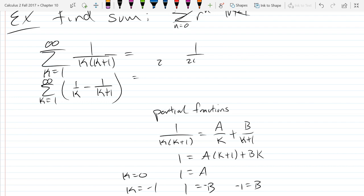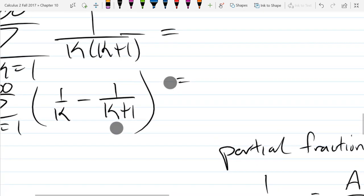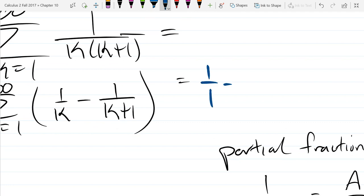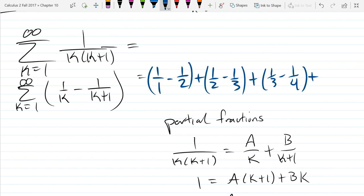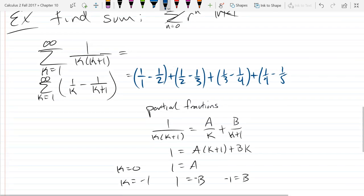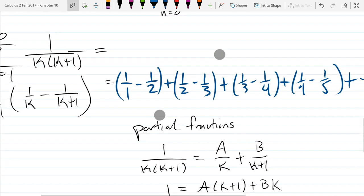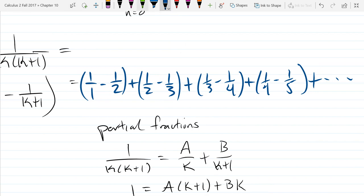All right, now write out the first four terms of this sequence in the second version here. What pattern do you see, or what happens as we write out more terms? The denominator is definitely increased by 1. What do I get if I add two of these adjacent terms together? Zero.